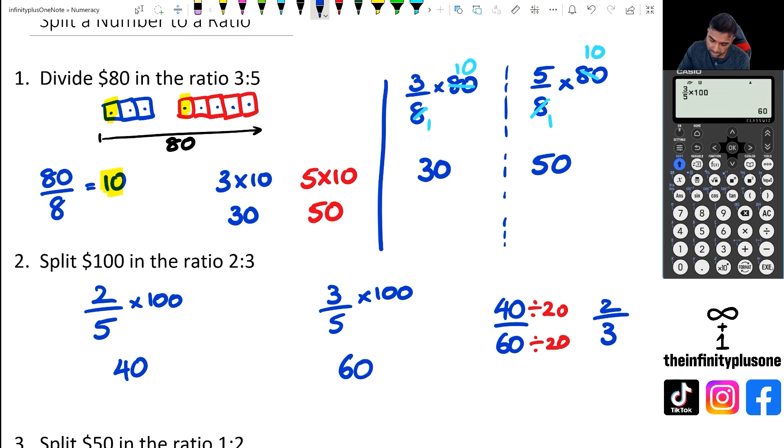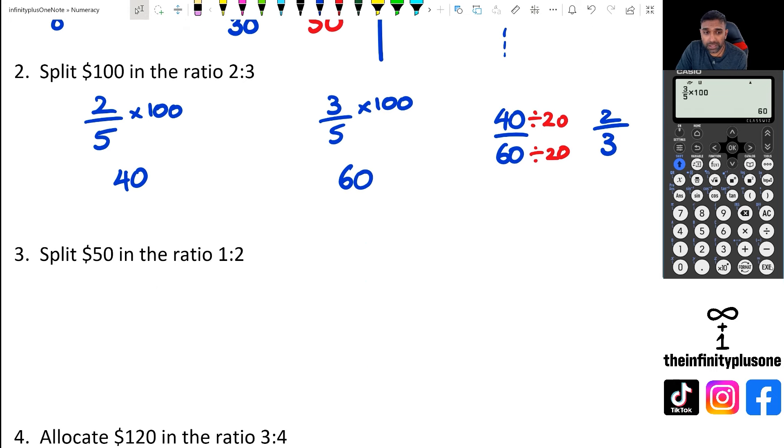How about question three? We've got 50 and one to two. Now in this case sometimes the numbers don't work out very nice, sometimes the numbers are going to be ugly and this happens to be one of those situations. So we've got one to two, that means one out of three because three parts in total times 50, and then we've got two out of three times 50. Again I'm just going to put this in the calculator, so I've got one over three multiplied by 50 which is going to give me a recurring decimal. At this point I'm going to put this as 16.67.